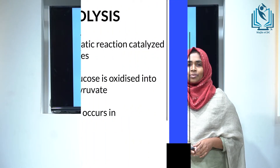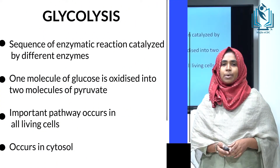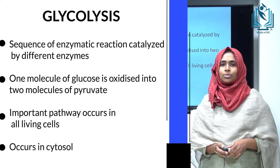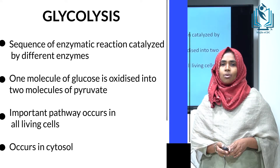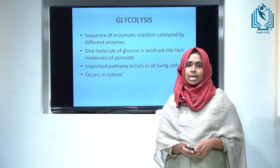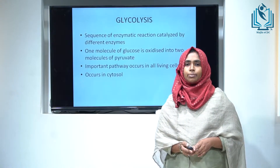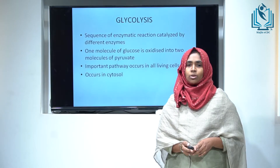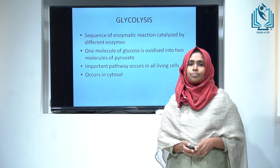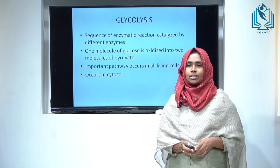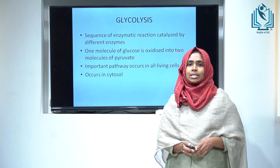Glycolysis is a sequence of reactions catalyzed by different enzymes in which one molecule of glucose is converted into two molecules of pyruvate. It occurs in almost all living cells and takes place in the cytosol of the cell. It can occur either aerobically or anaerobically. In the aerobic process, pyruvate is the end product, while in the anaerobic process, lactate is the end product, and molecular oxygen is not involved.